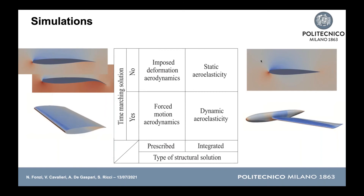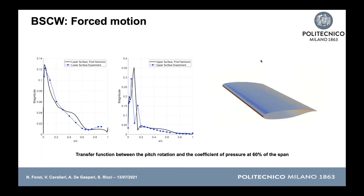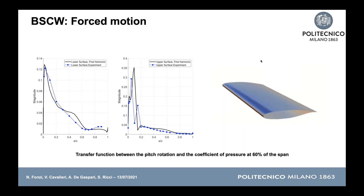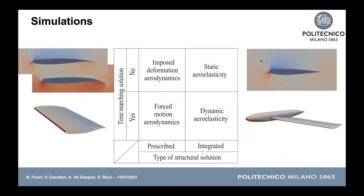For unsteady simulations, one test case is the Benchmark Supercritical Wing (BSW), a common benchmark with experimental results for comparison. The results confirmed the unsteady implementation was working correctly. Shown here is the transfer function between pitch rotation and the coefficient of pressure at 60% of the span.